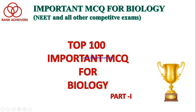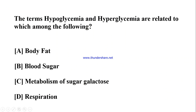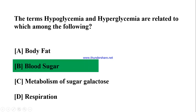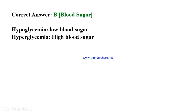Question: The terms hypoglycemia and hyperglycemia are related to which among the following? A) body fat, B) blood sugar, C) metabolism of sugar galactose, D) respiration. Correct answer: B) blood sugar. Hypoglycemia means low blood sugar; hyperglycemia means high blood sugar.